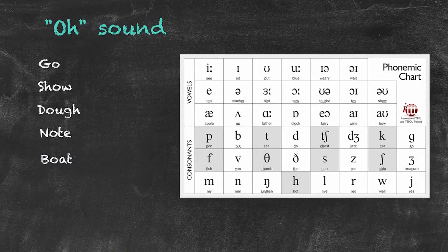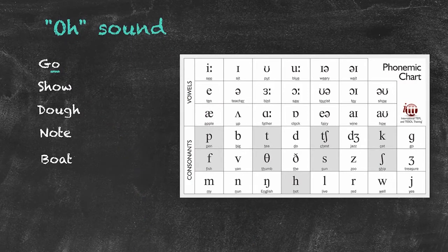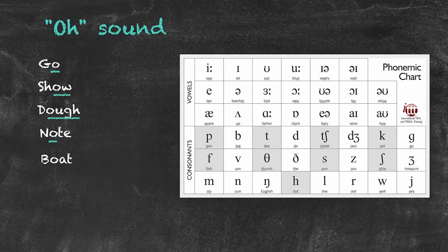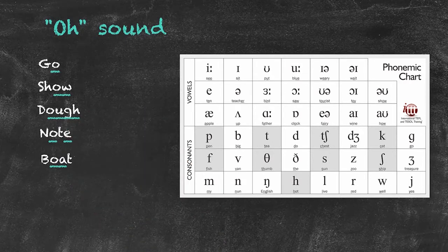There are five different spelling patterns to tell our students so they can identify when to make the O sound. We can have a simple letter O, O-W, O-U-G-H, O with the magic E which turns our vowel into what we knew as long sounds, and O-A as in boat.